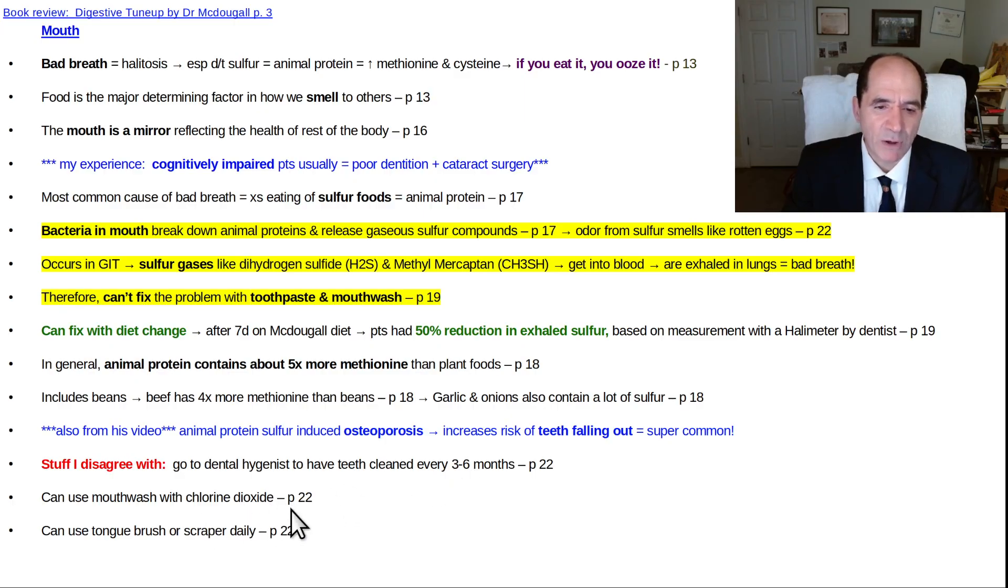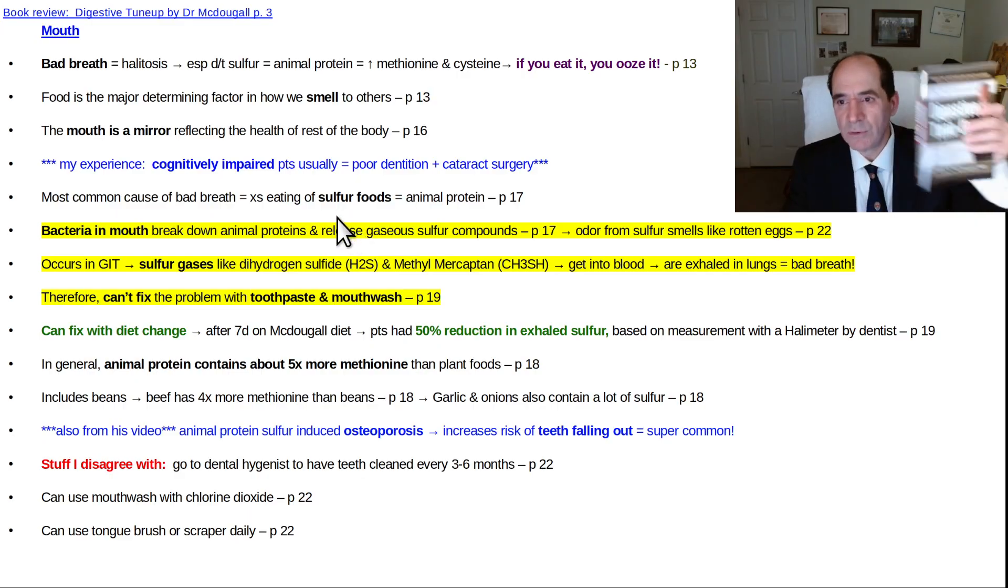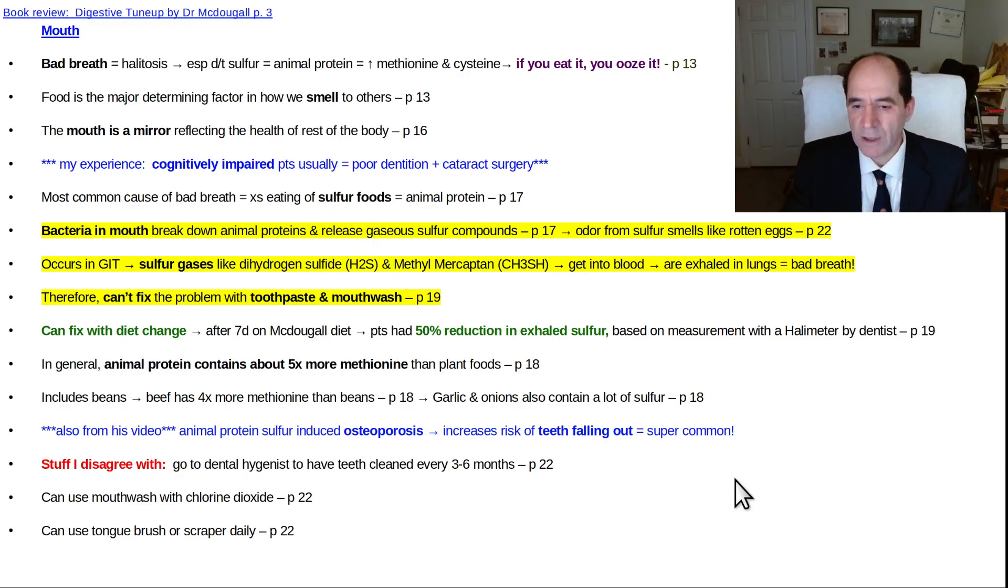He also said something about a mouthwash of chlorine dioxide. And again, this is before anybody knew about the whole Nathan Bryan stuff about the tongue pathway of activation of nitric oxide. So nobody knew at the time when this book was written. So anyways, that's it for part two of the Digestive Tune-Up book review, what's in the mouth. Hope that was helpful.